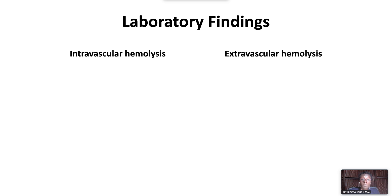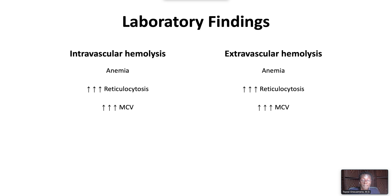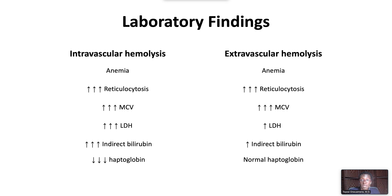The extent of lab abnormalities depends on where hemolysis is occurring. Both intravascular and extravascular hemolysis present with anemia. The degree of anemia depends on how rapidly red cells are removed from the circulation and how well the bone marrow compensates through increased reticulocytosis, also manifest as an elevated mean corpuscular volume. Lactate dehydrogenase tends to be markedly elevated with intravascular hemolysis, but not as strongly — and sometimes not at all — with extravascular hemolysis. A similar pattern can be seen with indirect hyperbilirubinemia. In intravascular hemolysis, haptoglobin is markedly decreased, while in extravascular hemolysis it can be normal.